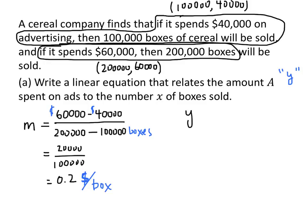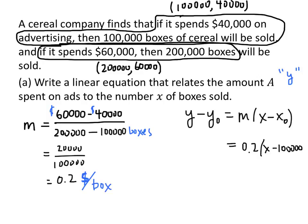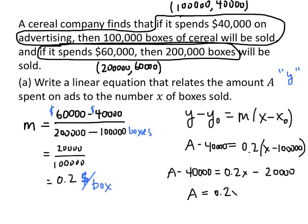The point-slope form is Y minus Y₀ equals M times (X minus X₀). We can use either of our points; let's use the first one. Our M is 0.2 and our X₀ is 100,000. Since our variable is called A, not Y, we write A minus 40,000 equals 0.2 times (X minus 100,000). Distributing the 0.2 gives 0.2 times 100,000 equals 20,000, and adding 40,000 to both sides gives A equals 0.2X plus 20,000.